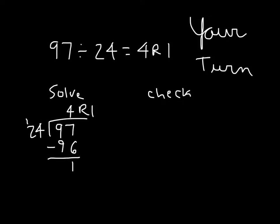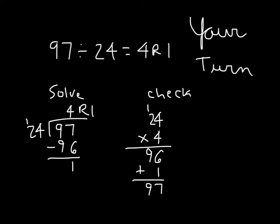Let's check that. We'll take our divisor, which was 24, and multiply it by 4. 4 times 4 is 16, regroup 1. 4 times 2 is 8, plus 1 is 9. So we have 96. Remember to add back in that remainder, giving us 97 — and that matches with what we were dividing, our whole.